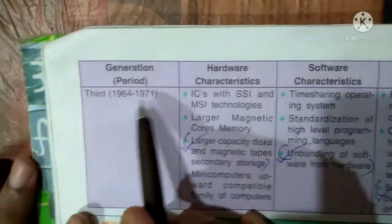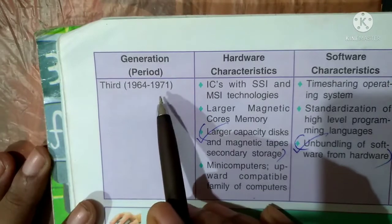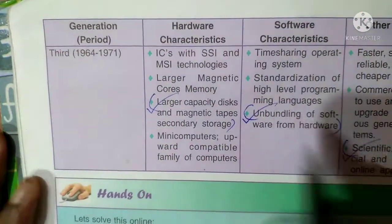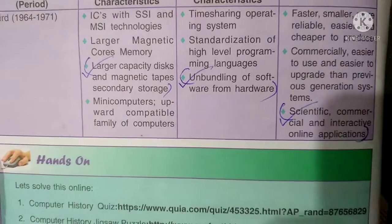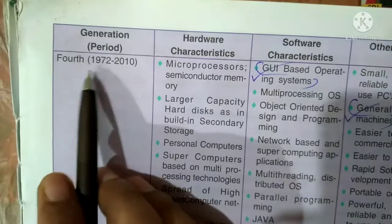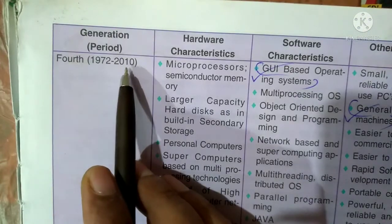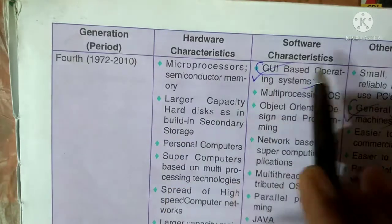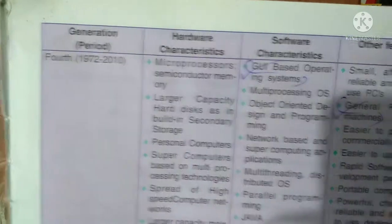You should know about the Third Generation, covering the period 1964 to 1971, with its hardware characteristics, software characteristics, and other features. Fourth Generation used microprocessors, covering the period 1972 to 2010, also with its hardware characteristics, software characteristics, and other features.